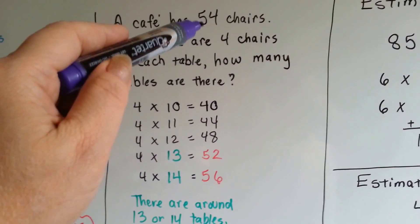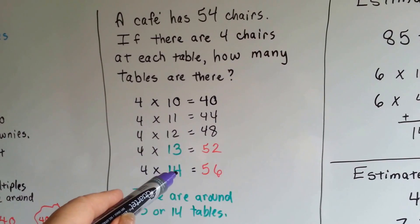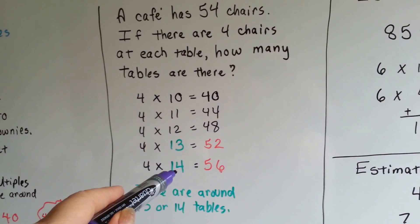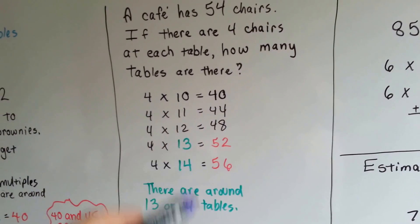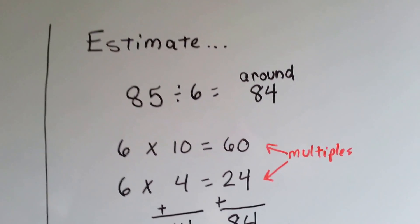Now, if there's 54 chairs, they would need 56 to have the 14th table. So there wouldn't be 4 chairs at that table. There'd be only 2, wouldn't there? So 13 is probably the best answer for that estimate. How about this one?